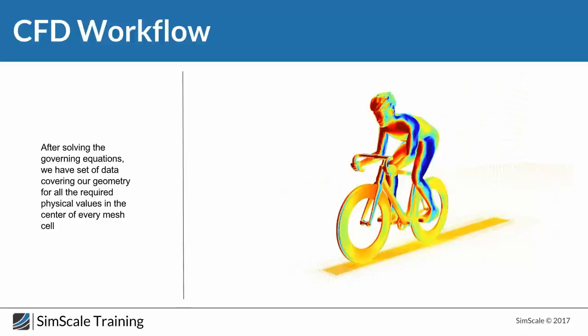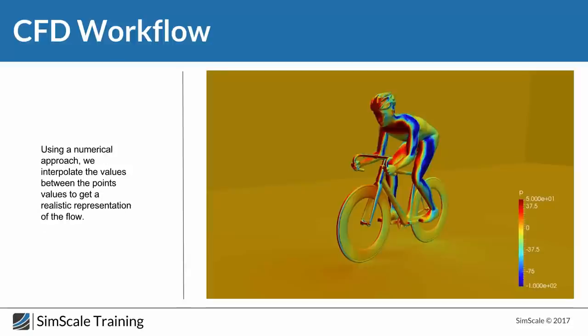Then we solve these governing equations, and we will have a set of data covering our geometry for all required physics values in the center of each mesh cell. We're going to have data at points — the centers of cells. After this, we interpolate the values between the points, which gives us a smooth distribution of physical values used to analyze the performance of our product or the behavior of our geometry.